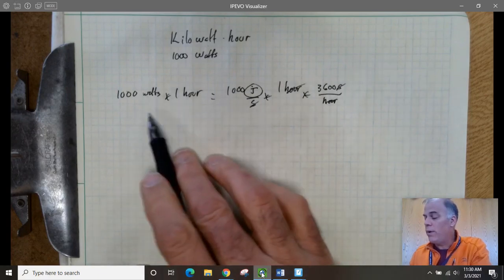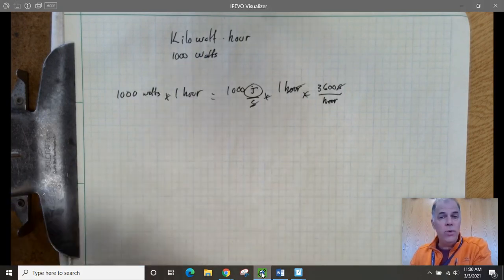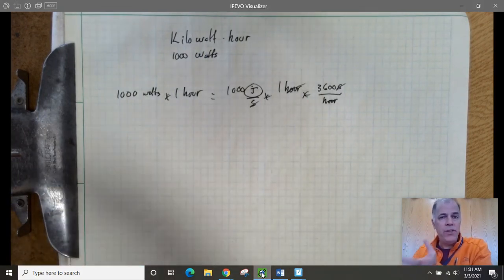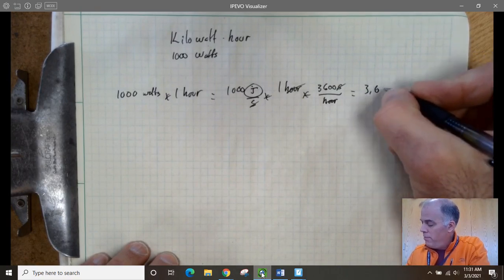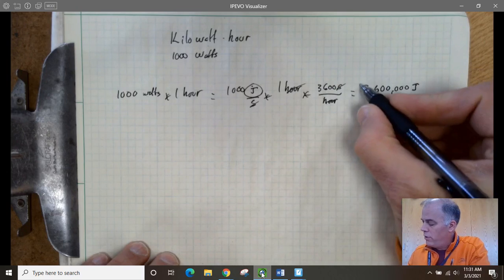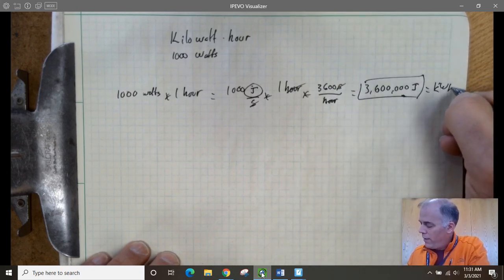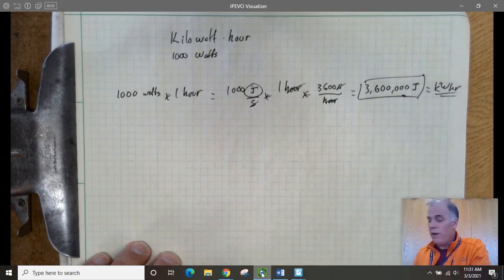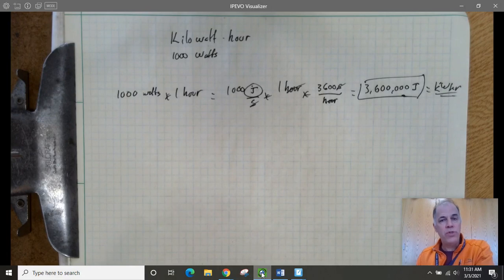So it turns out that a kilowatt hour is actually a unit of energy. It's a pretty big chunk of energy. It comes out to be 3,600,000 joules. That's a kilowatt hour.